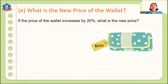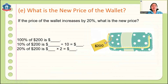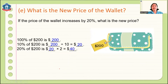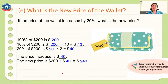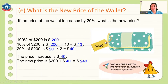Now, what is the new price of the wallet? If the price of a $200 wallet increases by 20%, what is the new price? The 10% of 200 is 200 divided by 10, which equals 20. For 20%, we multiply 20 by 2, giving us 40. Therefore, 20% of 200 is $40. The new price is 200 plus 40, which equals $240. Since the price increased by 20%, the new price of the wallet is $240.